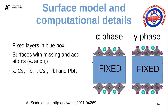To reduce computational cost, we fixed layers within the bulk and allowed only the symmetric surface endings to relax. We also looked at surfaces with missing and added atoms — surfaces with missing atoms are represented as V_X, and those with added atoms as I_X, where X denotes the constituent element. We also considered complexes of these elements.